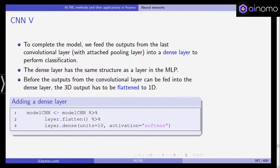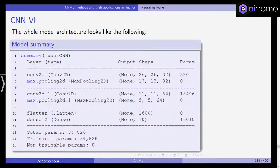To complete the model, we feed the outputs from the last convolutional and pooling layer into a dense layer to perform classification — the same structure as in our multi-layer and single-layer perceptron, with 10 units for the 10 digit classes and softmax activation. Before this, the 3D output must be flattened to 1 dimension. The model summary shows the first layer with 320 parameters, the second with nearly 19,000, and the last with 16,000 — totaling 35,000 parameters.